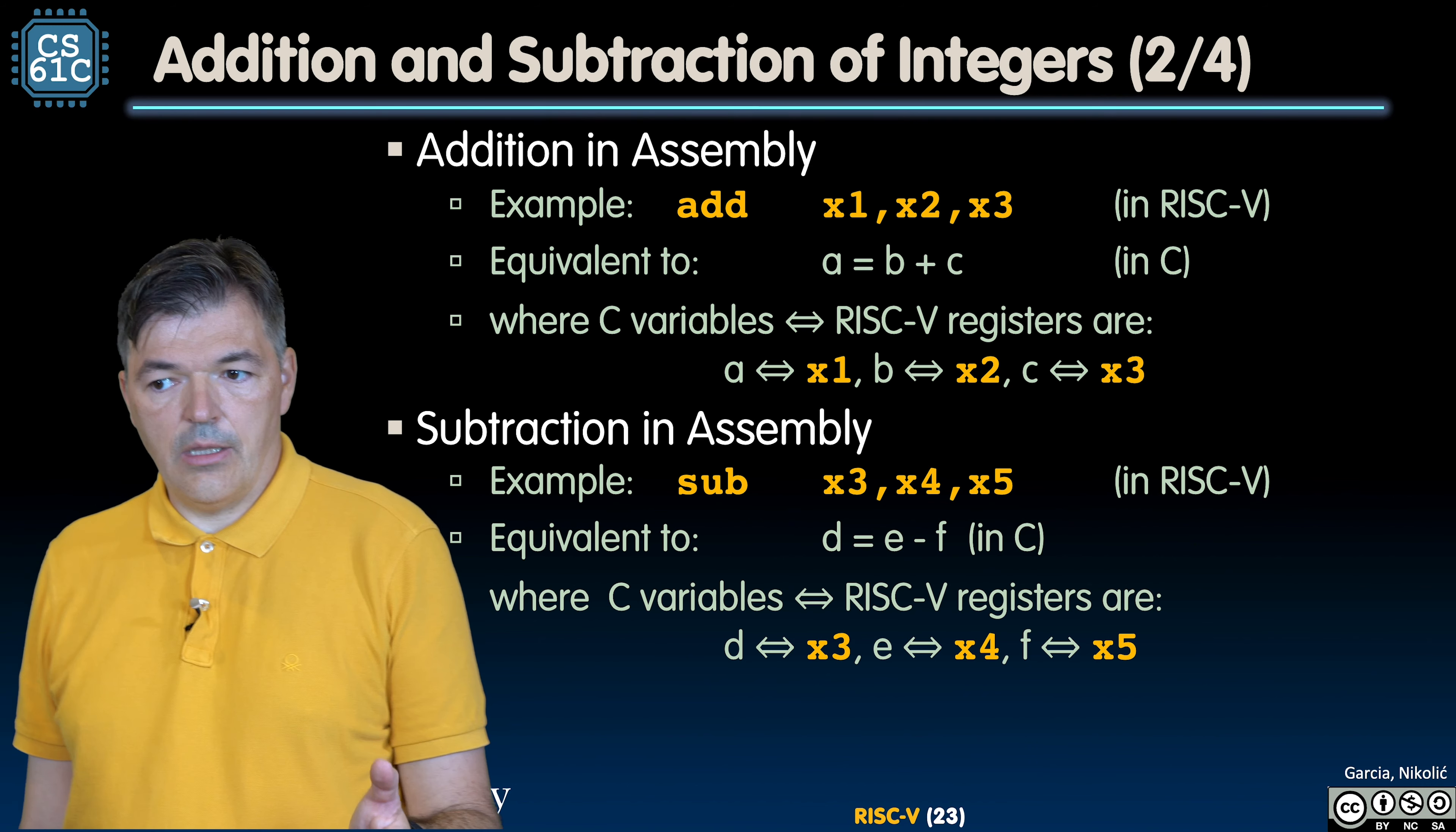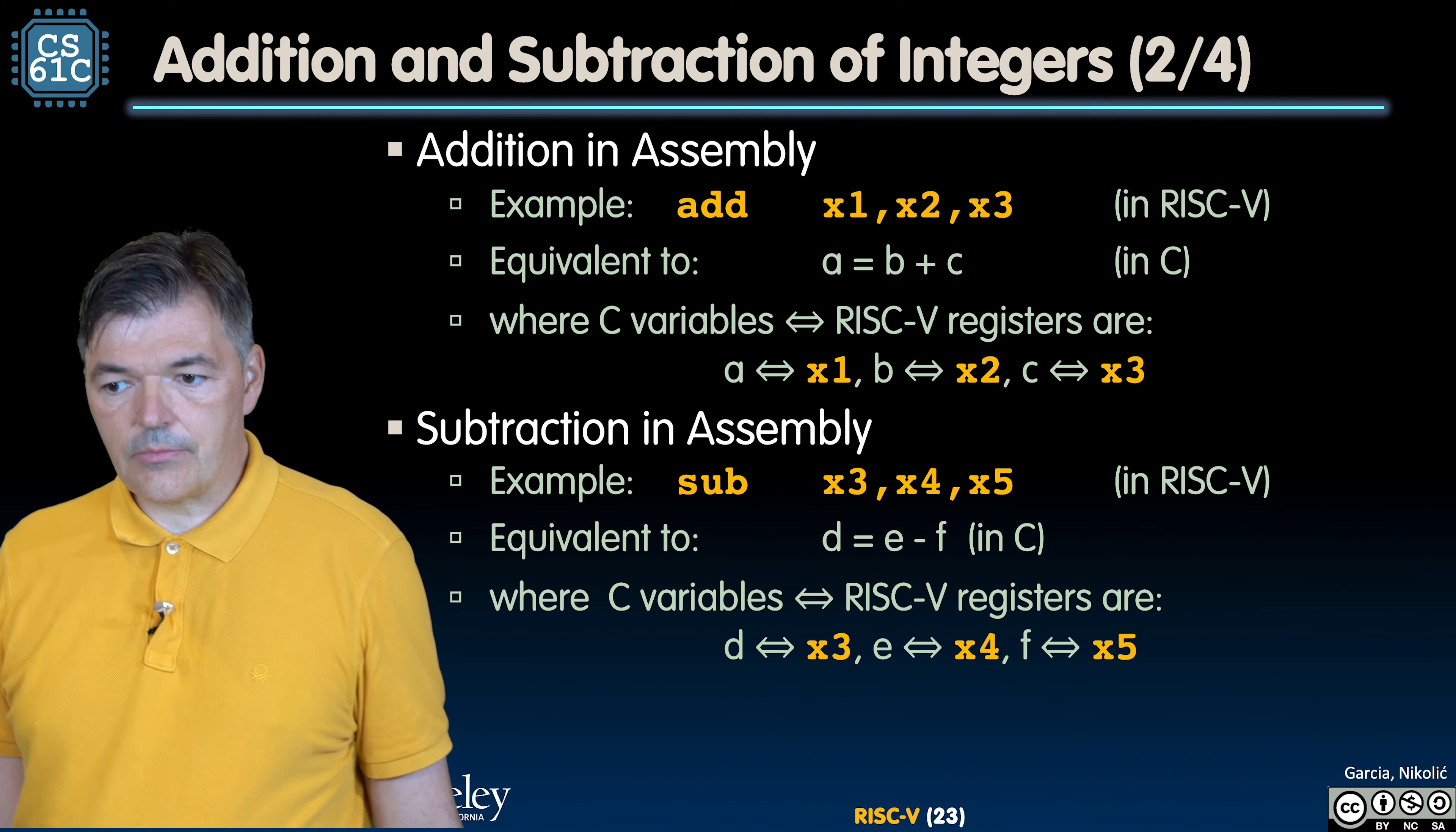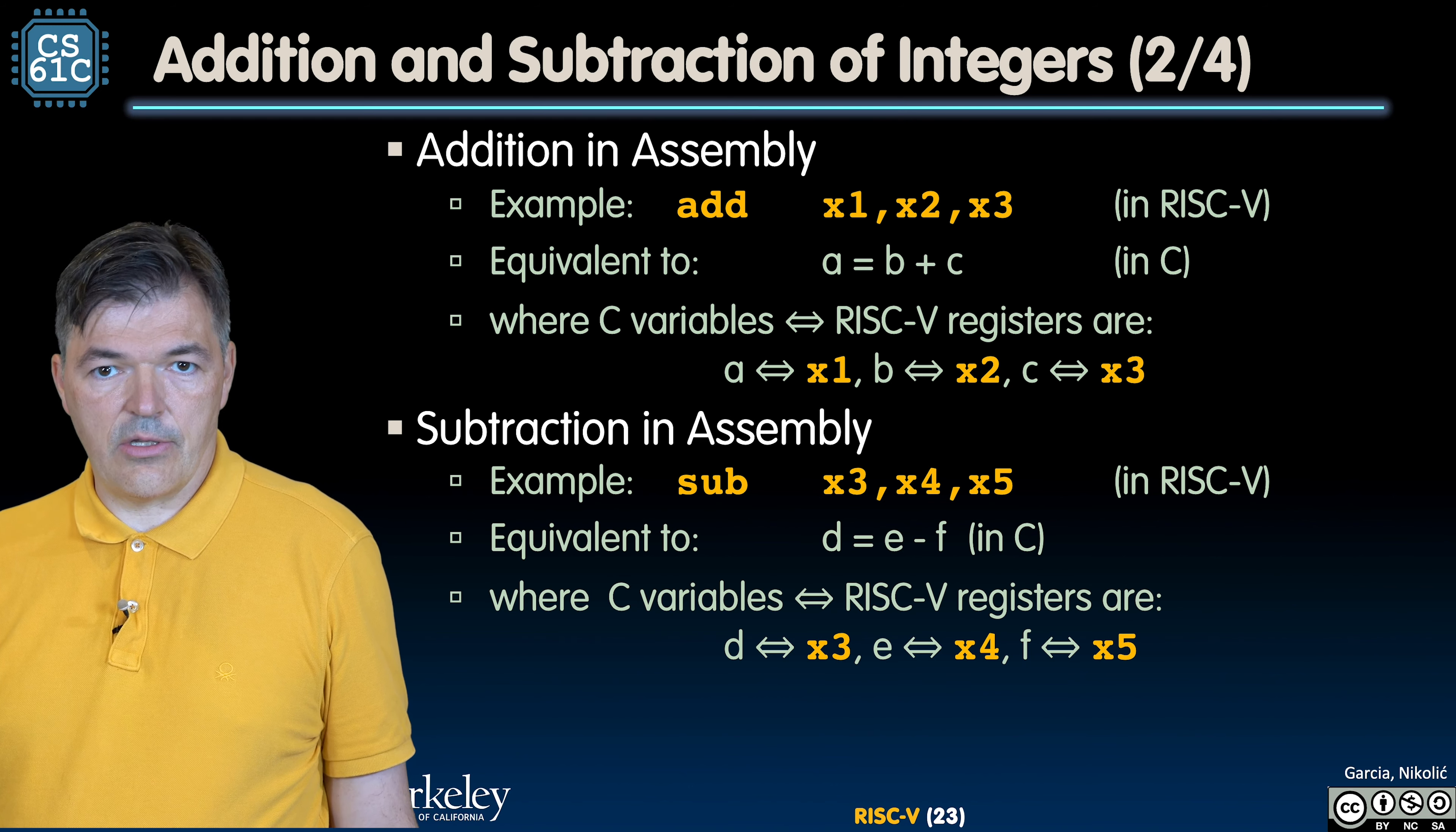Let's take a closer look at how to use addition and subtraction instructions. For example, here is the addition in assembly - the command is simple, add, easy to remember. Add x1, x2, x3 is equivalent to a C instruction A = B + C. C variables correspond to the values stored in particular registers in the RISC-V processor. So A would be stored in register x1, B is stored in register x2, and C is stored in register x3.